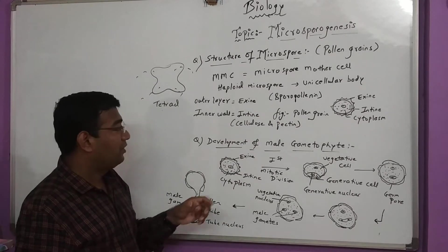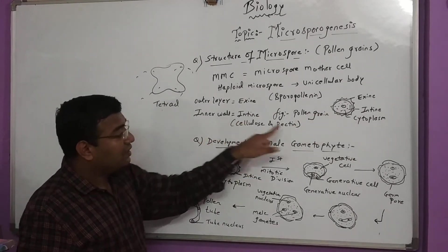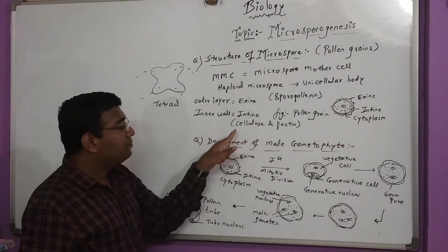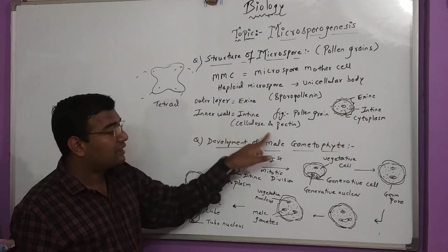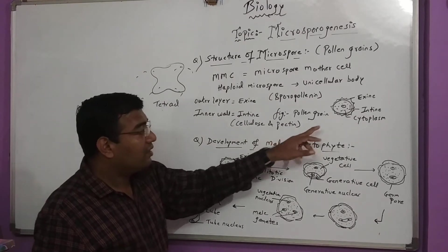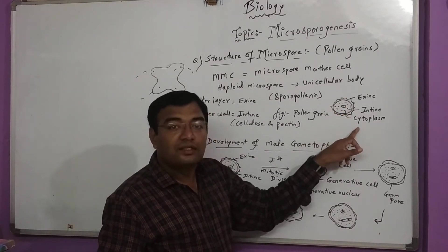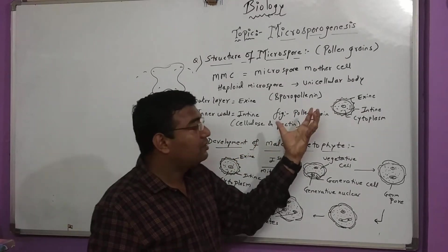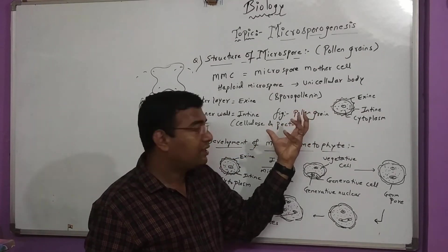Sporopollenin is the outer covering of exine, which is a non-biodegradable material. The inner wall is known as intine. Intine is made up of cellulose and pectin. The jelly-like fluid inside is cytoplasm, a nutritive fluid which supports the pollen to survive and grow.